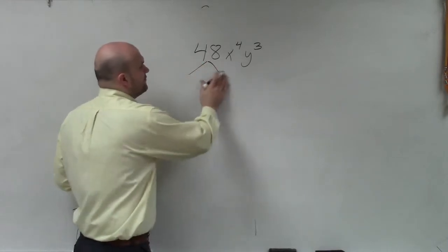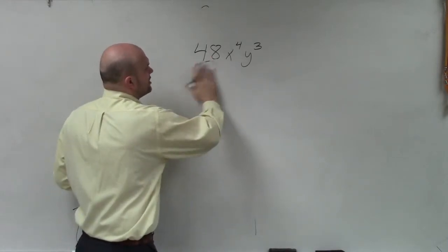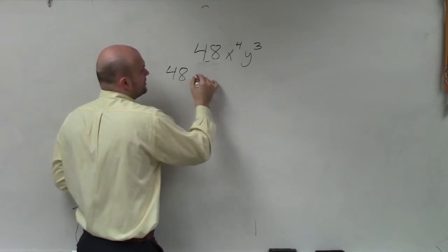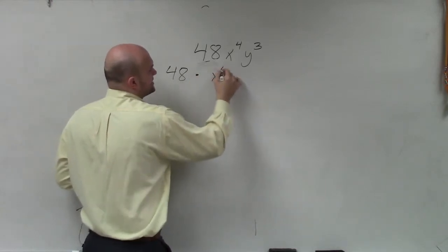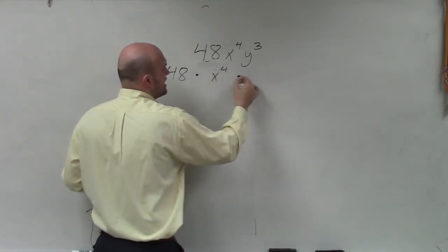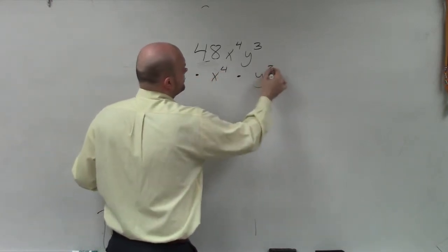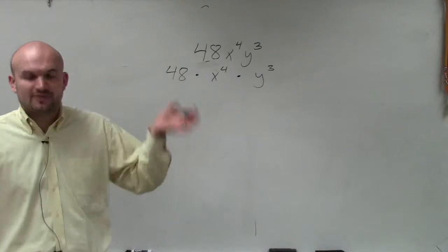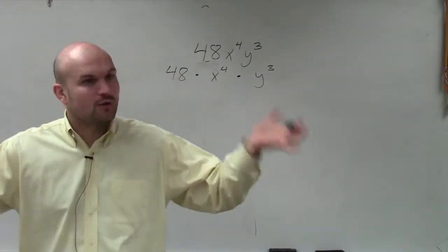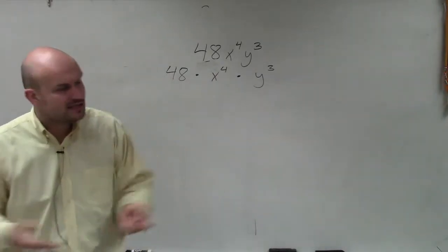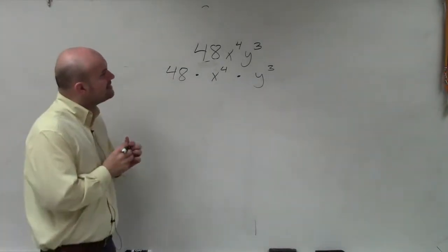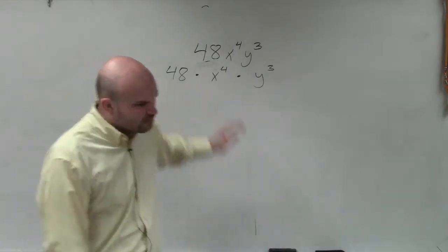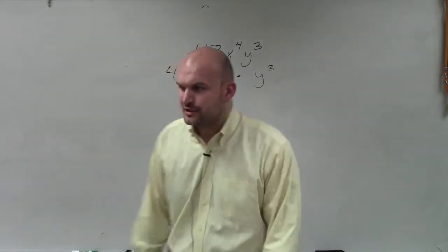So the first term here — we can basically break this up into 48 times x to the fourth times y cubed. I'm breaking this down in the slowest way to do it, and then I'll show you guys the tips and tricks, or just a quicker way to do it.